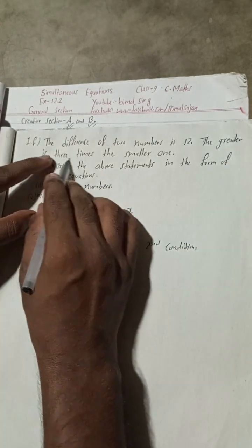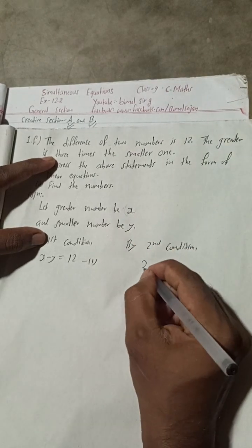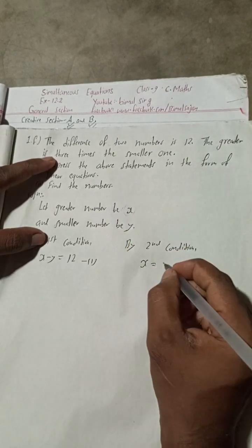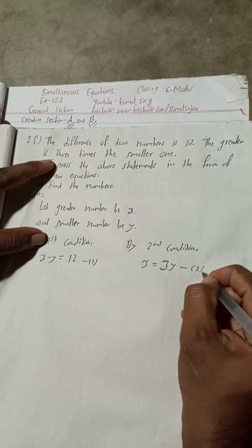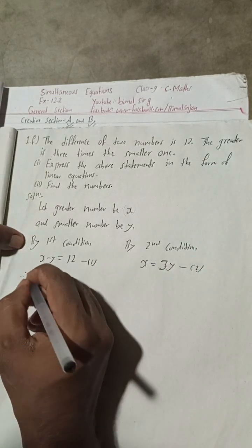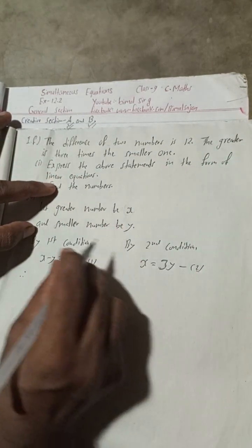By second condition, the greater is three times the smaller one. The greater number is x, so x is three times y, the smaller number. This is our equation 2. Therefore, the above statements in the form of linear equations are these two.